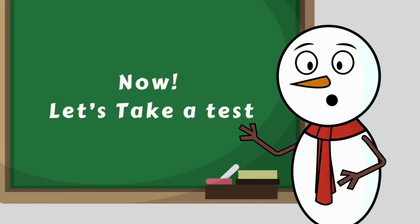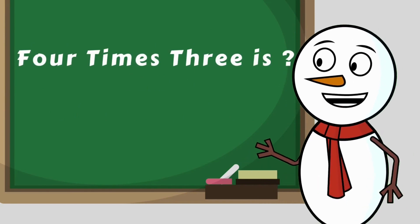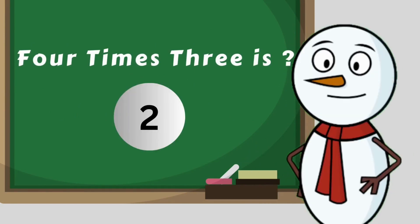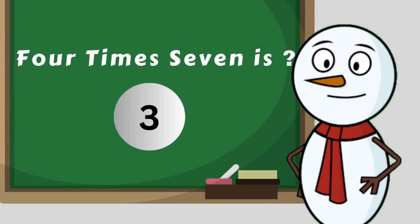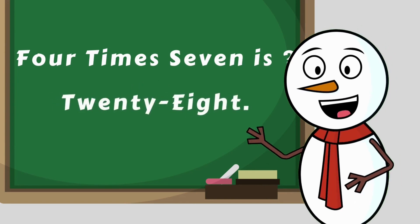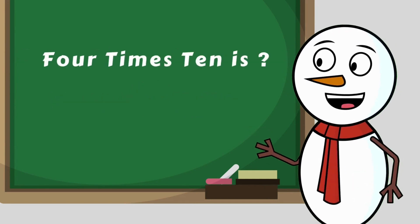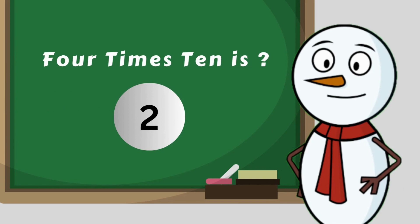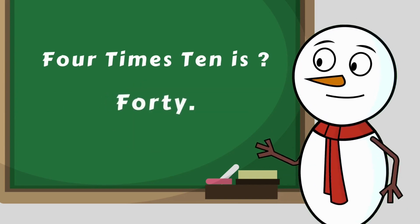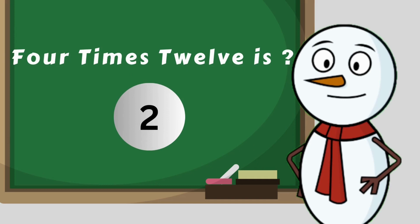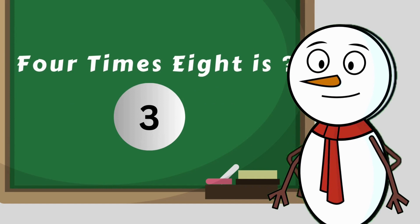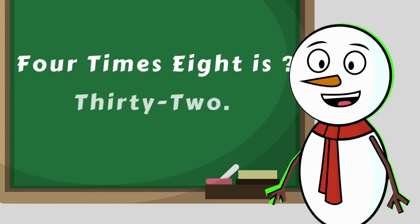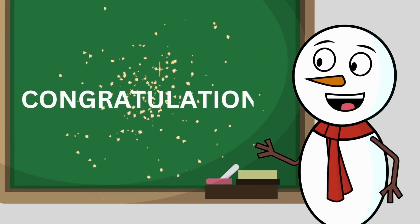Now, let's take a test. 4 times 11 is? 32. Congratulations! You have learned the table of four.